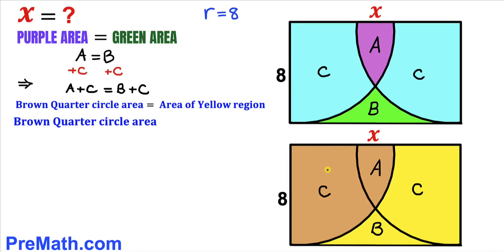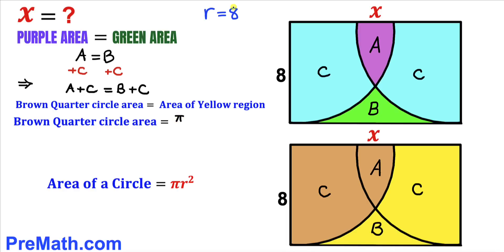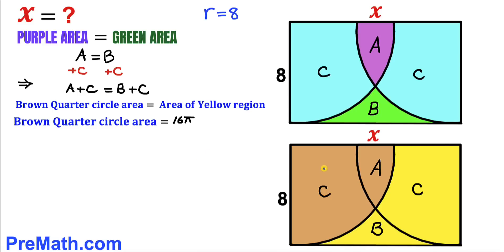Let's calculate the area of this brown quarter circle. Recalling the area of a circle formula: area equals pi r squared. So the area of this brown quarter circle is pi times r squared, where r is 8, giving us pi times 8 squared divided by 4. That simplifies to 64 pi divided by 4, which equals 16 pi.